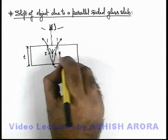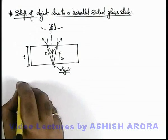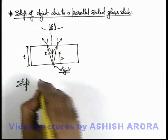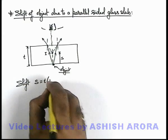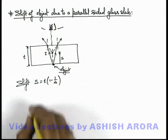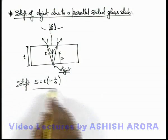This is the shift by which the object is shifted, and in this situation the shift, as we already studied, is s = t(1 - 1/μ). In the previous section we obtained it.